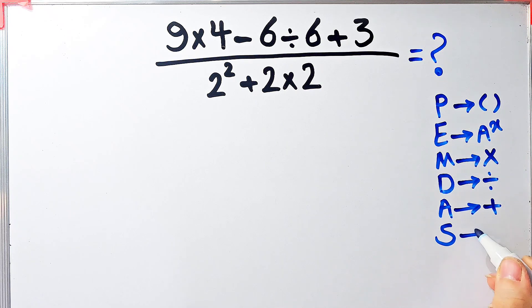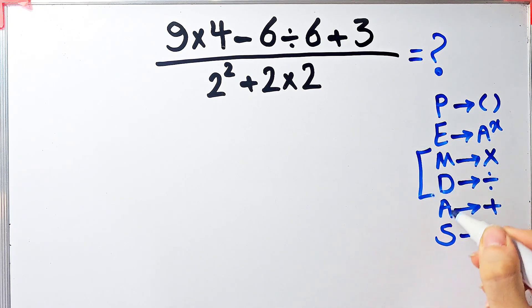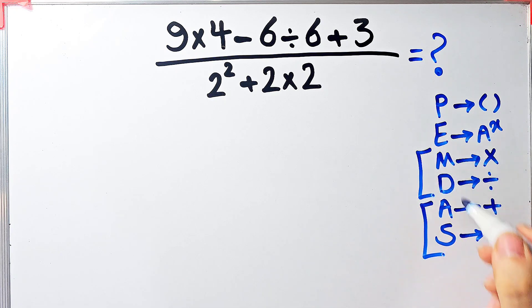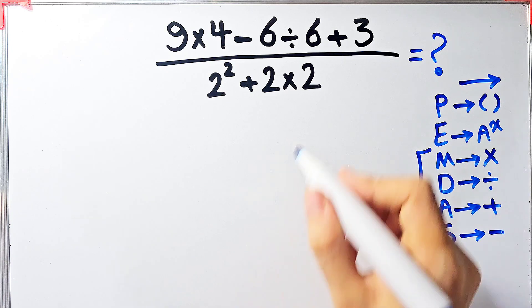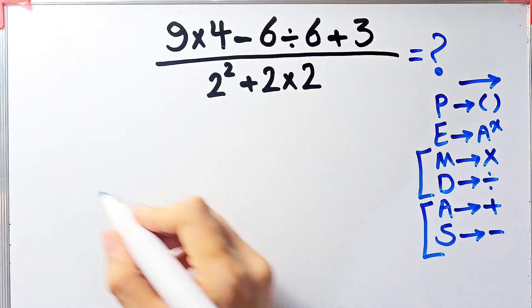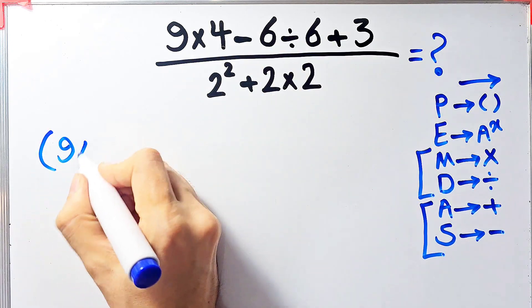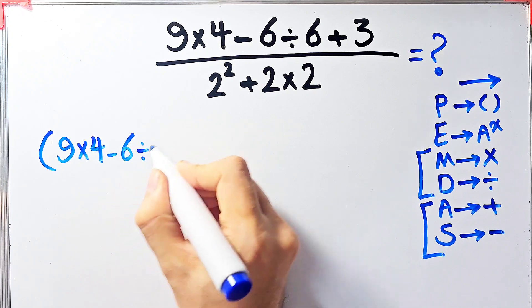A stands for addition and S stands for subtraction. Multiplication and division have the same level of priority; also addition and subtraction have the same level of priority. When we have both in an expression, we start from the left and simplify. Let's simplify and solve this question step by step together.